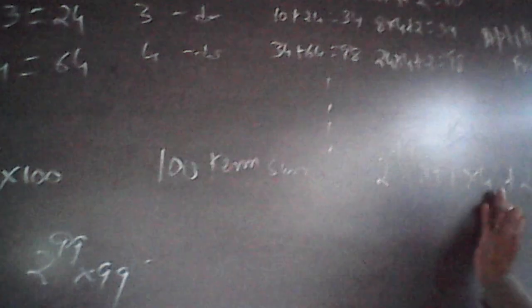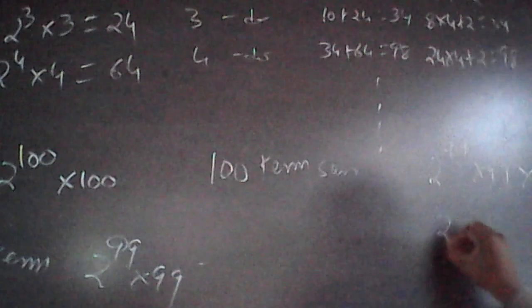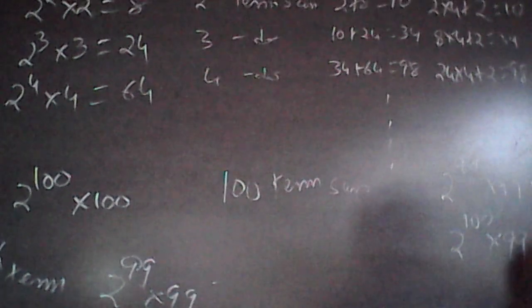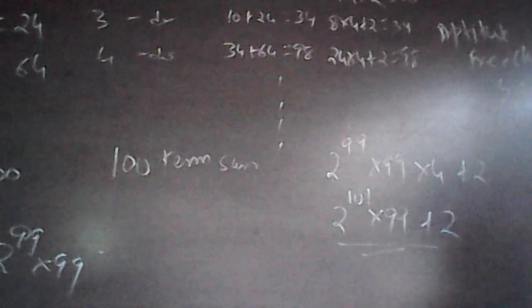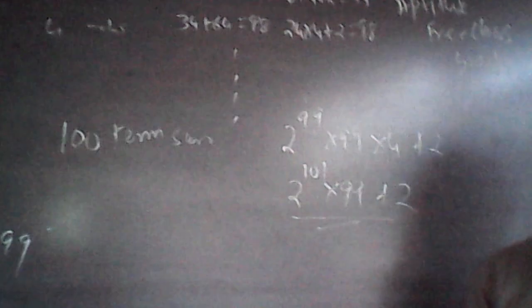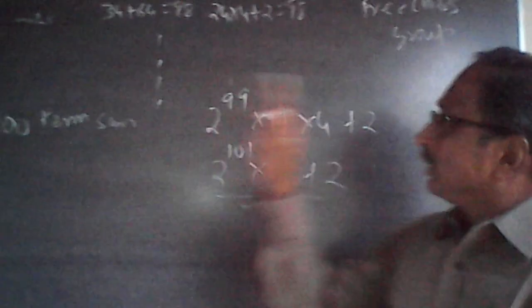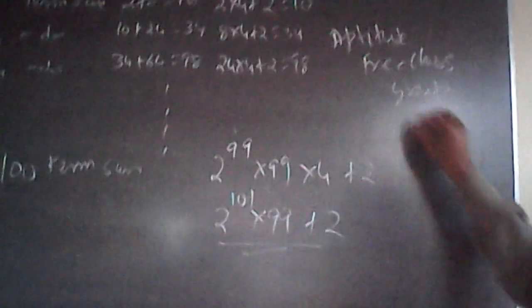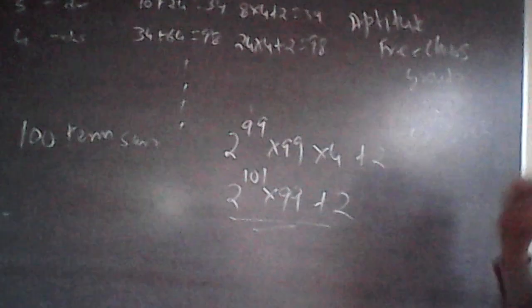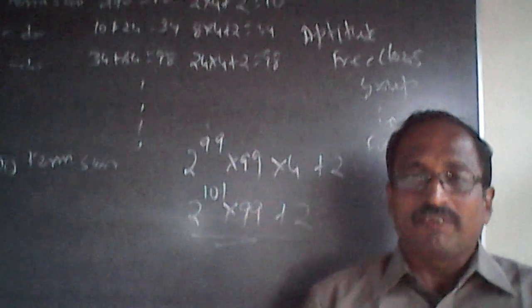Since 4 = 2^2, we can write the sum of 100 terms as 2^101 × 99 + 2. This problem requires first identifying the general term, then finding how the cumulative sums relate to the previous term. It's a very tough TCS question, but with practice you can master it. Please post any questions in the aptitude free class group on Facebook, and subscribe to my channel.